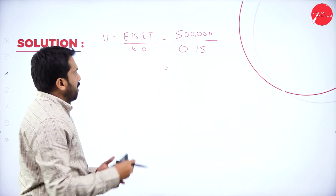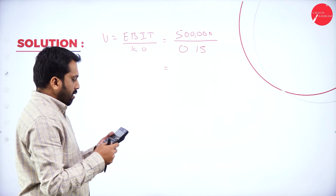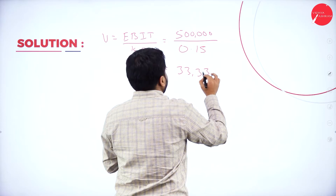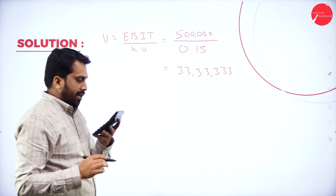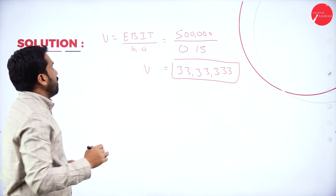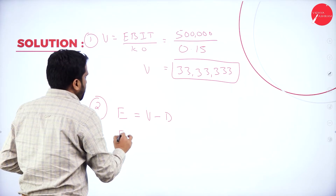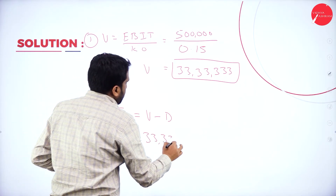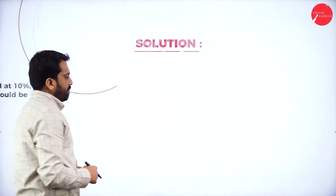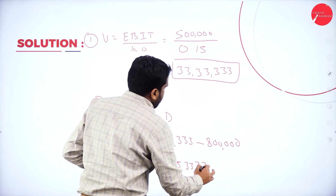First we calculate value. Value is equal to EBIT divided by KO. EBIT is 5 lakh and KO is 0.15, so 5 lakh divided by 0.15 gives us 33,33,333. That is the value of the firm. Next, equity is equal to value minus debenture. So 33,33,333 minus 8 lakh gives us 25,33,333. That is the value of equity.